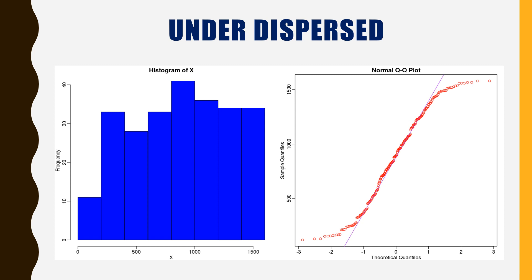We can observe here values are more or less evenly distributed in the histogram. If we observe the Q-Q plot, all the values lie along the straight line. They are less deviated. Only the few lower values and higher values are deviated from the straight line. So this is an example of under dispersed graph.